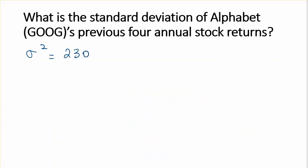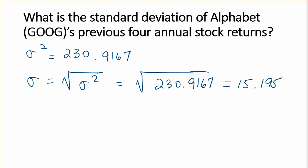We found that the variance was 230.9167. The standard deviation, represented by the Greek letter sigma, is the square root of the variance, sigma squared. We take the square root of 230.9167, giving us 15.1959. This is indeed a percent.